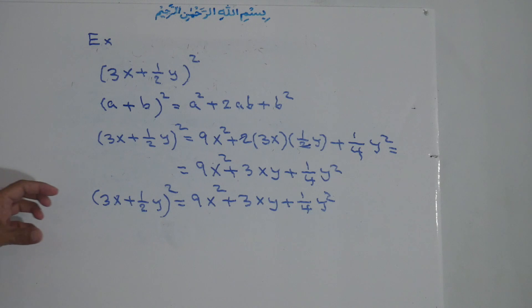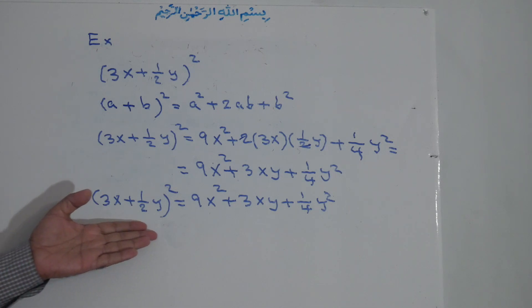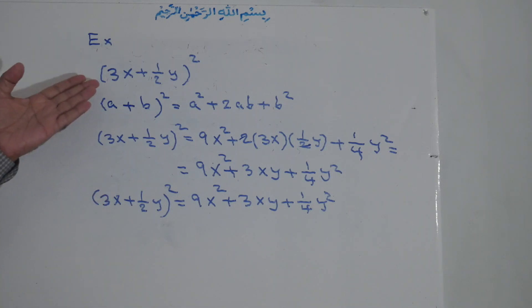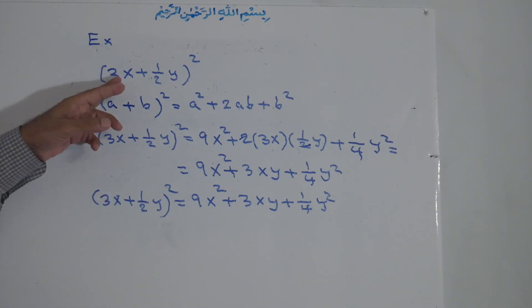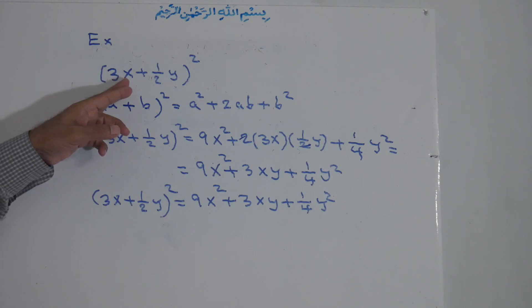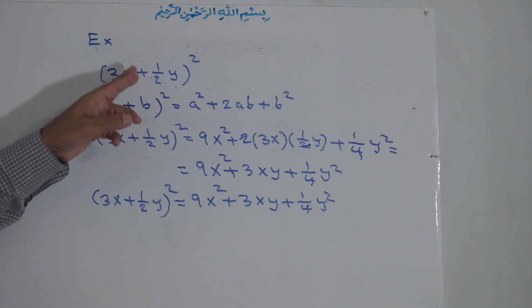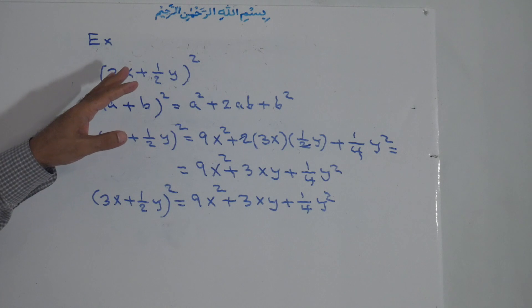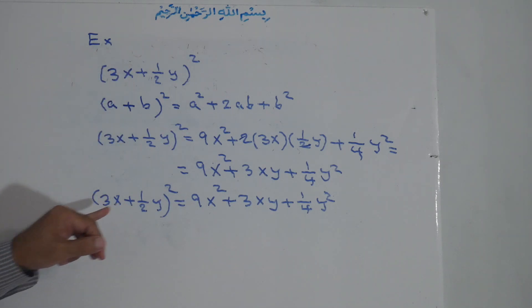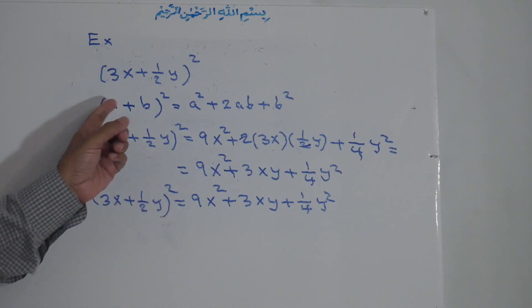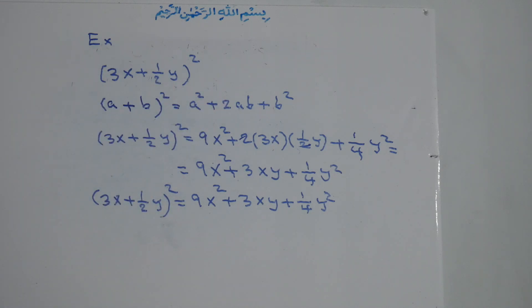But multiplying directly takes longer and there is a chance of mistakes. This is a very easy formula for binomials. If we add two terms — term a plus term b — all to the power of 2, this identity applies. I think one example is enough for this identity.